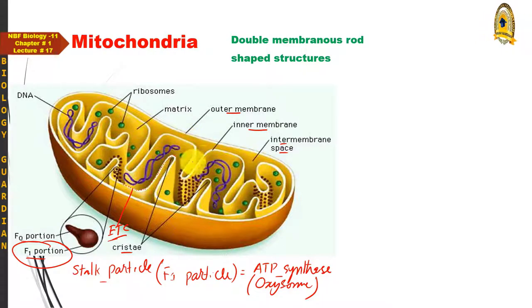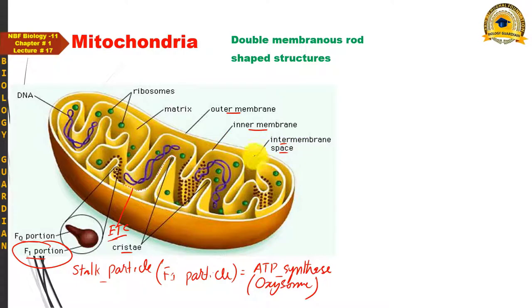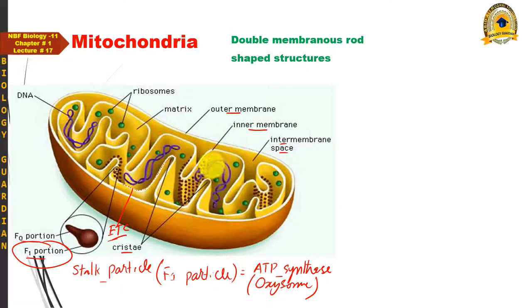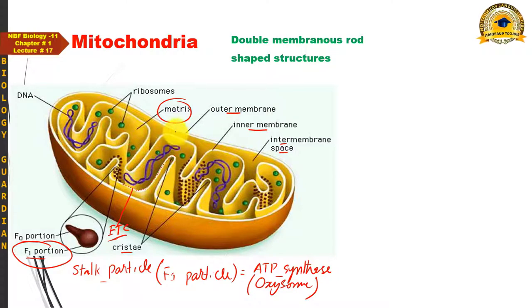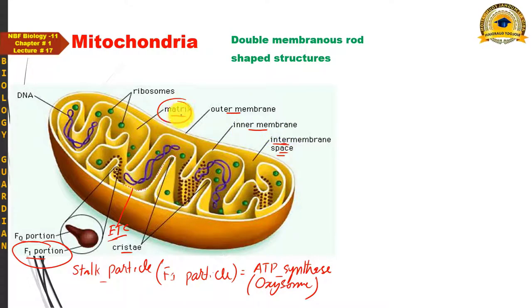Within the mitochondrion there are two compartments: one is the inter-membrane space, located between the two membranes, and the other is the matrix, located inside the inner mitochondrial membrane. So if asked how many compartments are present in a mitochondrion, the answer is two: the inter-membrane space and the matrix.